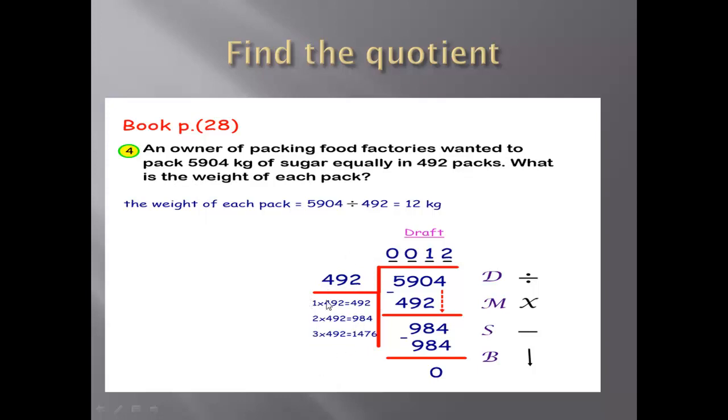Should write the draft of divisor, one time, two times, three times. Go to the dividend. 5 divided by this number, less than. 59 less than. 590, okay, divide.